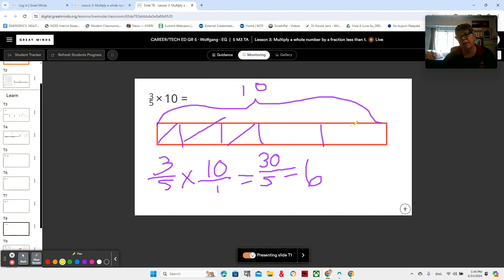Okay. Can we think about doing it the other way? Can we think about one fifth times three times 10? We could multiply these two together. That would be 30 times one fifth, which would be 30 fifths. And then we still need to divide 30 divided by five. And our answer is still six.